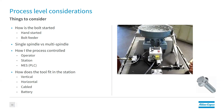How is the process controlled — operator, station, MES, PLC? In some cases, as soon as the last green light goes off for that tool, the system automatically recognizes the AGV or part can move down the line. We want to think about all the processes that come into controlling the functionality of that station. How does the tool fit in the station — is it vertical, horizontal, cabled, or battery? Engineering might specify how it has to be assembled, and that comes into consideration when looking at tooling, how it's mounted, and how the operator will work in the station.